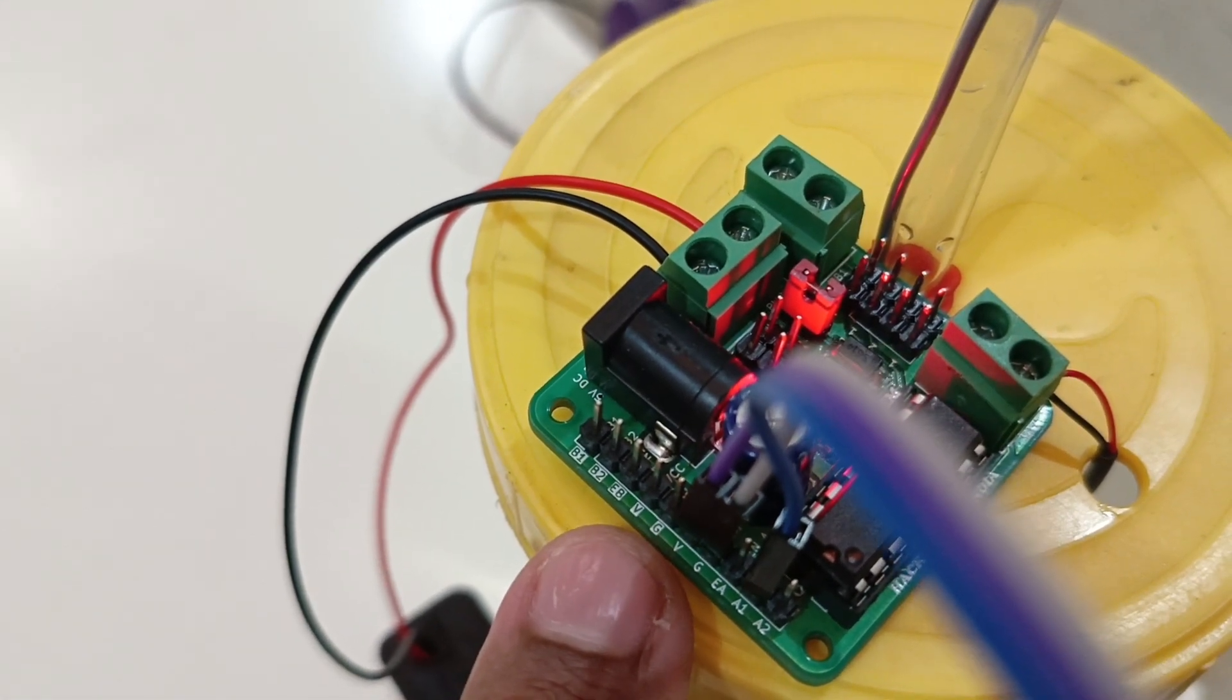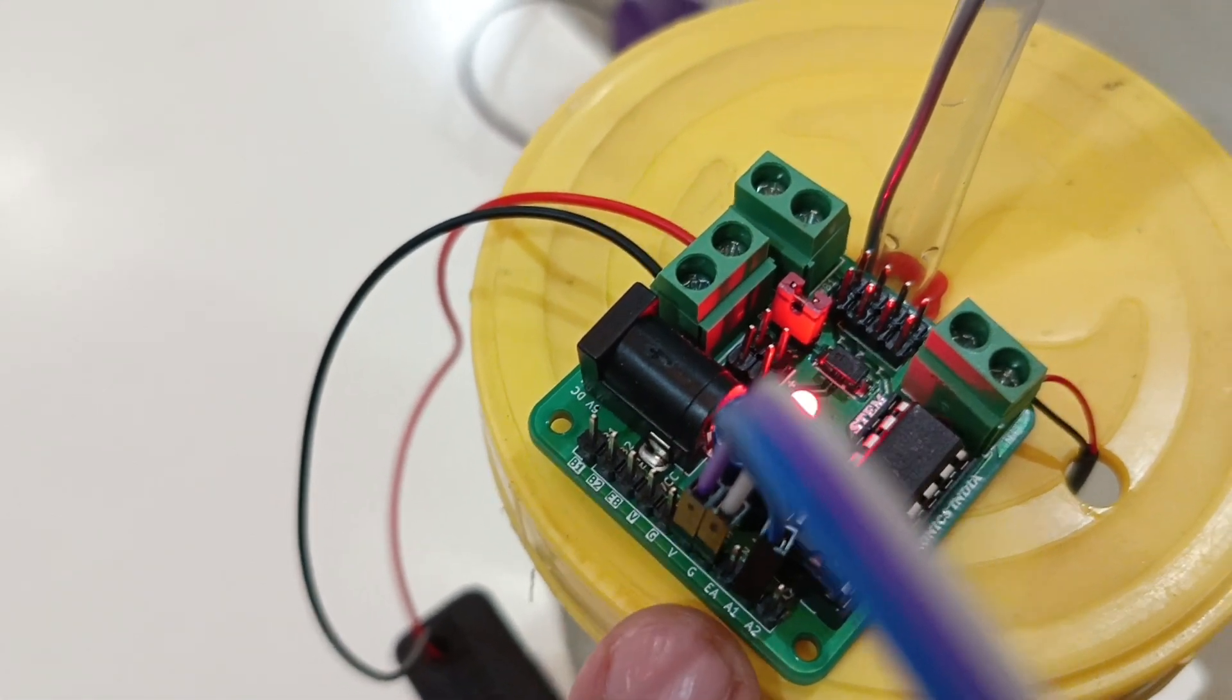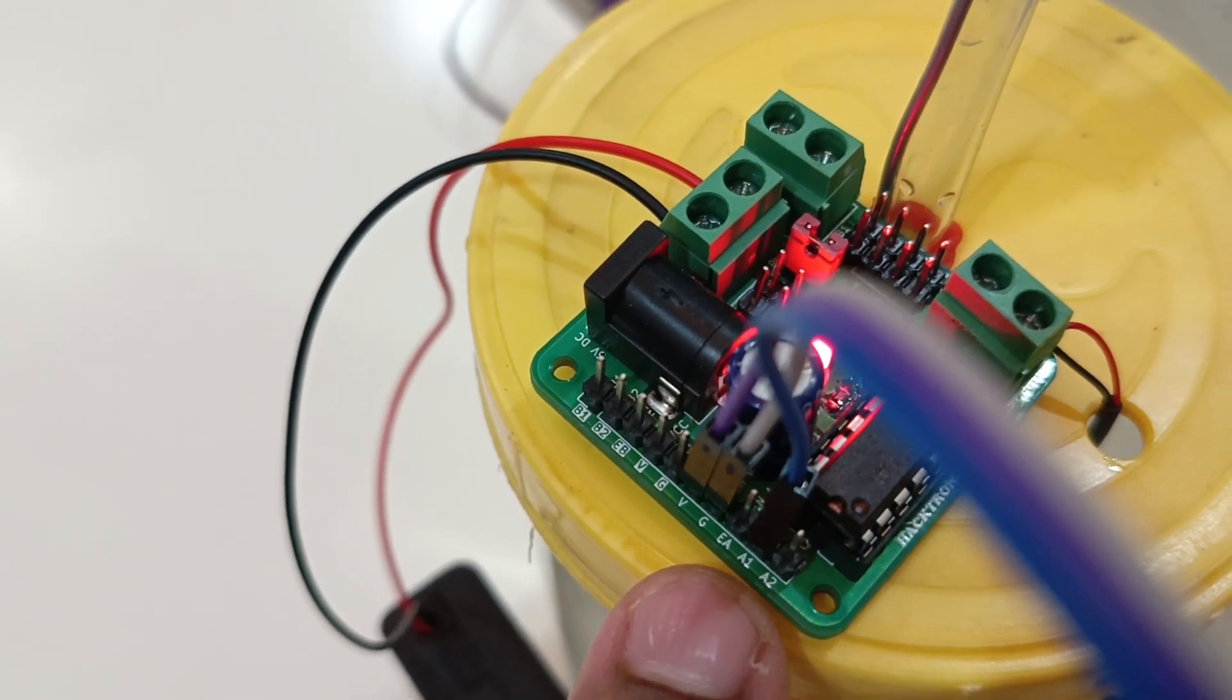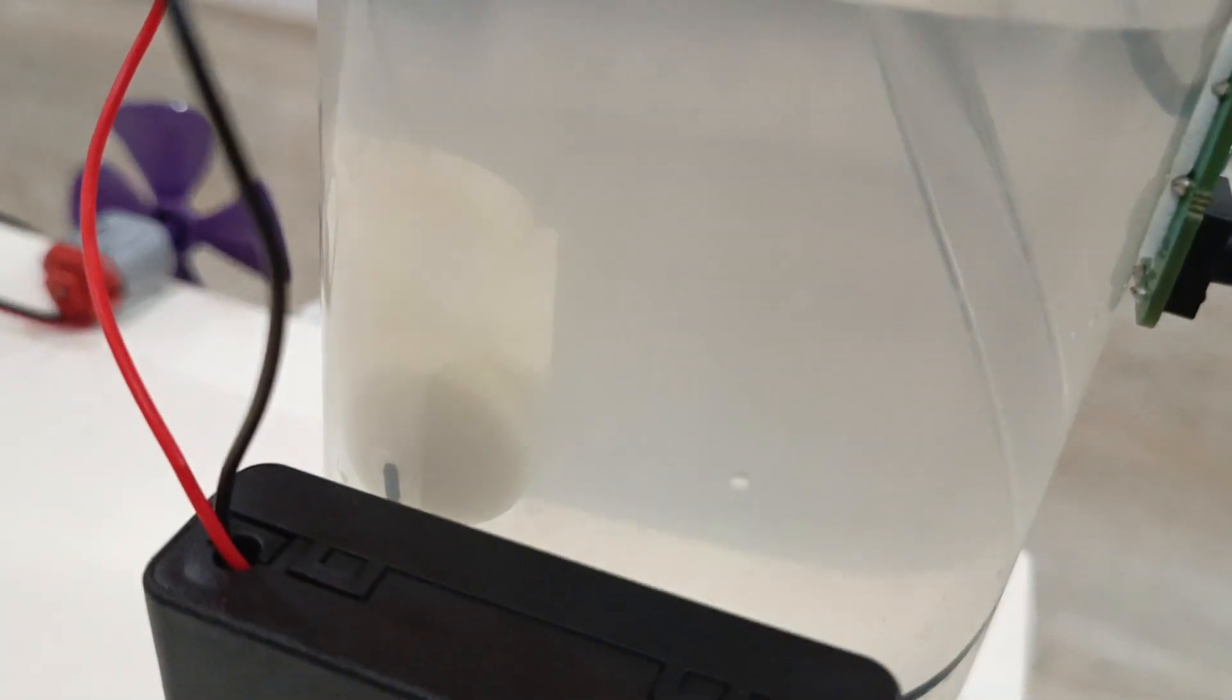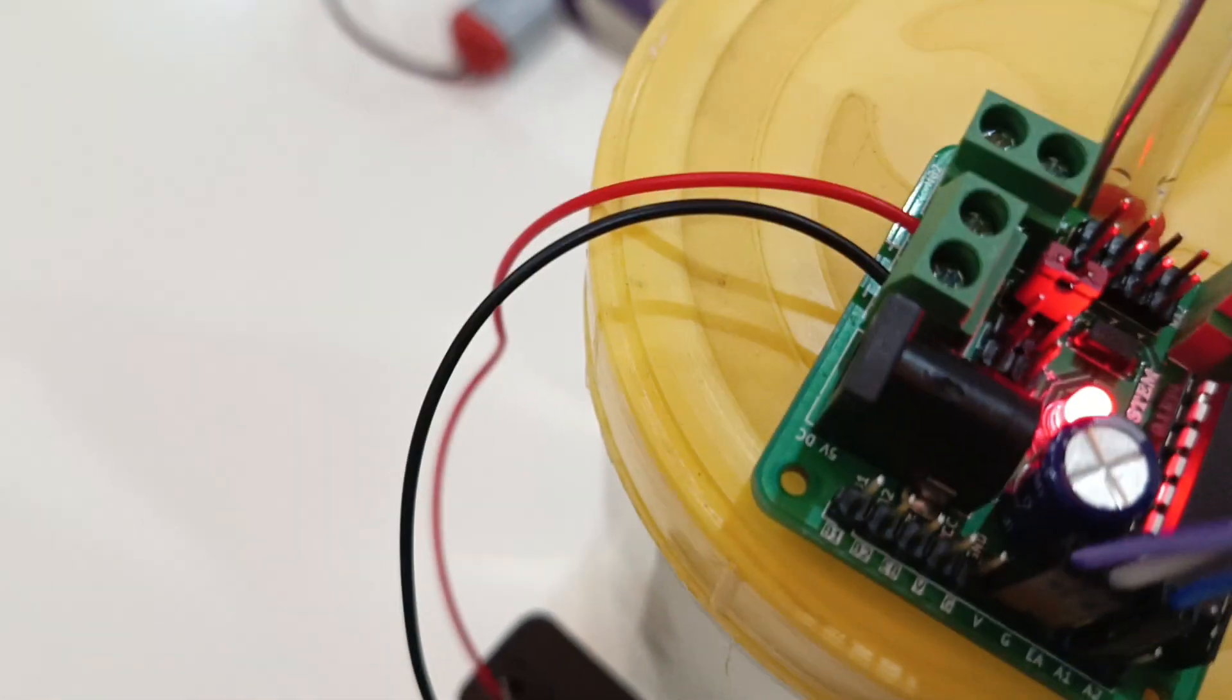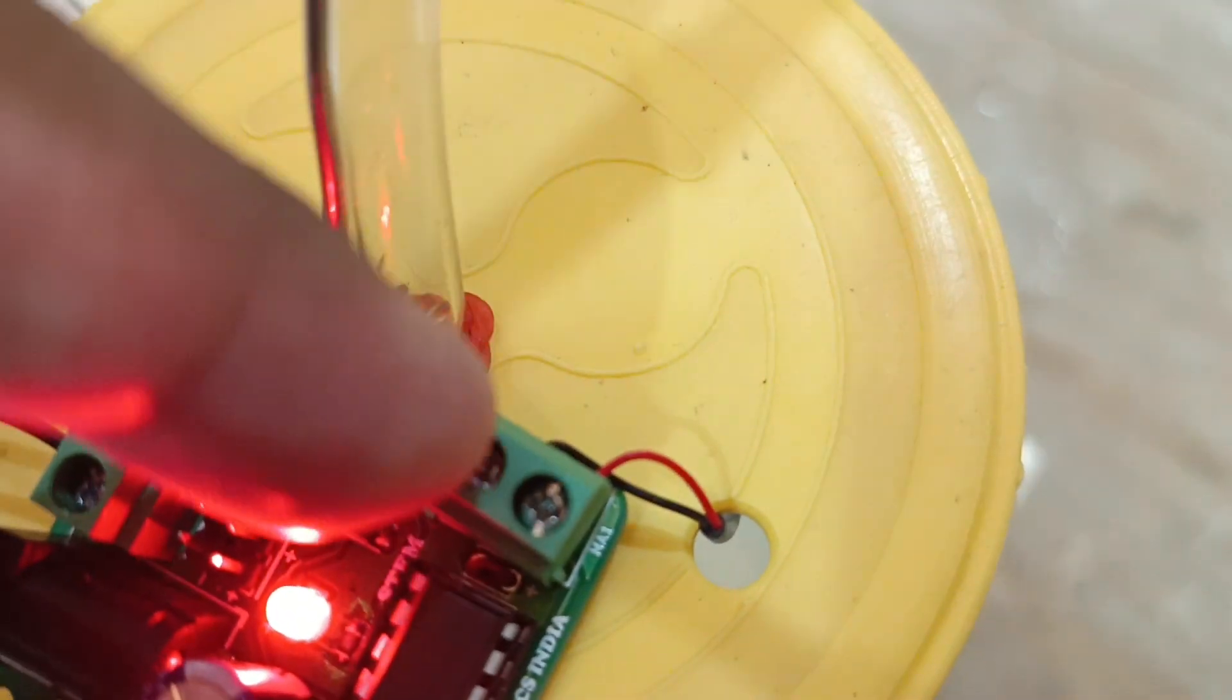V is connected to V, ground is connected to ground, and the signal is connected to A1. The pump is inside this beaker which is filled with water. You can see the pump there. The pump wire is connected to the motor terminals MA1 and MA2.